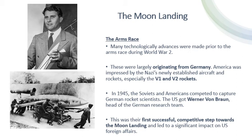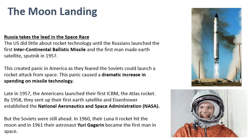When World War II ended, there was a mad scramble between Russia and America to recruit all these German scientists and engineers. America and Russia both thought they wanted to recruit them, and the US got probably the best of them all — Werner Von Braun. This was seen as a first successful step for the US when it came to the space race, the arms race, and eventually the moon landing.